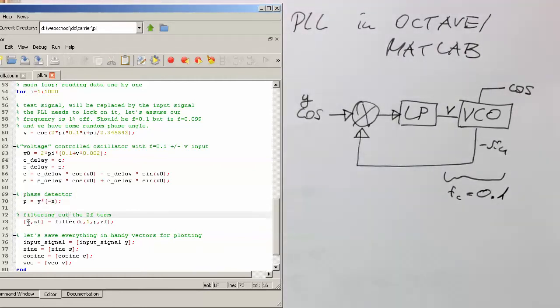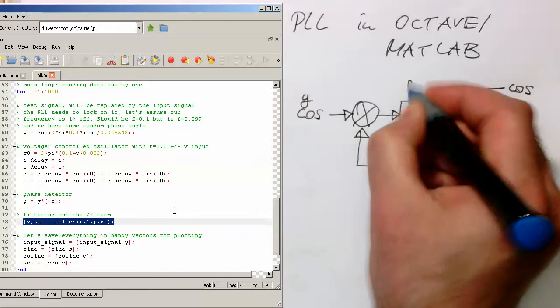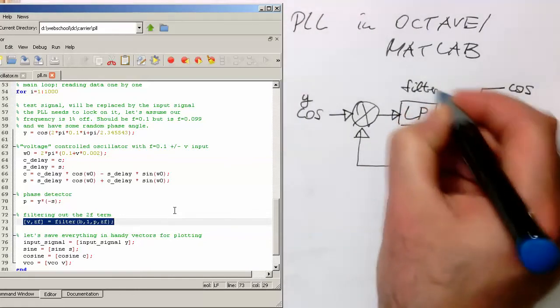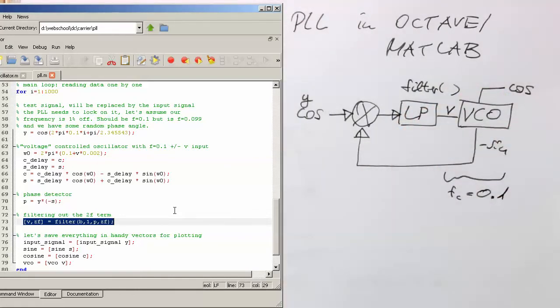So now the next step is the filtering operation. So that's here filter. This is the standard filter command. So the filter command gets our phase information here as multiplication out of our phase detector. And then this is low pass filtered and generates our voltage V as expected, which then goes into our VCO.